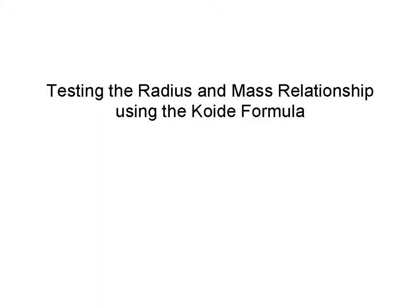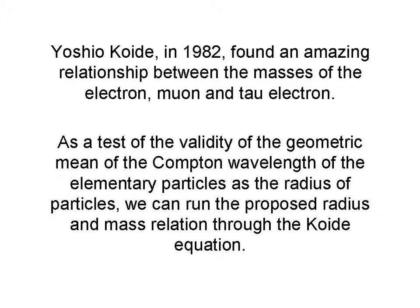So let us test the radius and mass relationship that we have using the Koide formula. Yoshio Koide, in 1982, found an amazing relationship between the masses of the electron, the muon, and the tau electron.